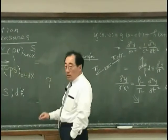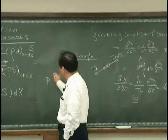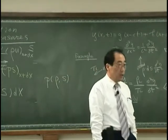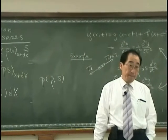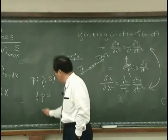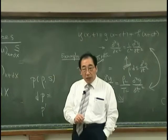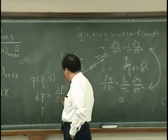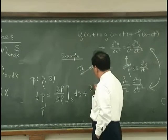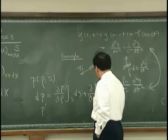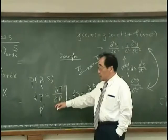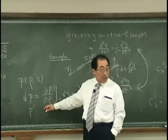We said that pressure is a function not only of rho, but also a thermodynamic quantity — entropy. Then, a small change in pressure, P prime, mathematically means we can write that as dP = (∂P/∂ρ) at constant S, times dρ, plus (∂P/∂S) at constant ρ, times dS. This is just a mathematical expression.